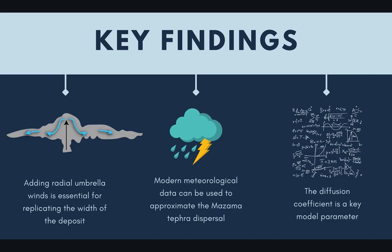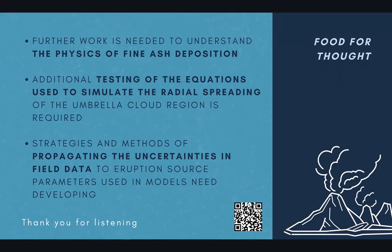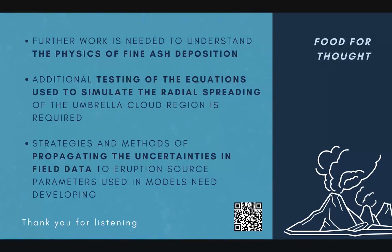And finally, the diffusion coefficient — as found in previous studies — is really key to matching the deposit to what we see on the ground, but more importantly, as I said, was this radial umbrella cloud spreading. To conclude this short talk, I'll just leave up some food for thought and areas that I think still require further study. Thank you very much for listening — I'm really looking forward to any feedback or questions that you may have.